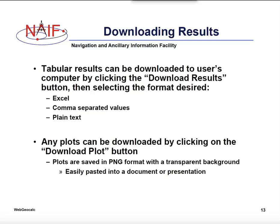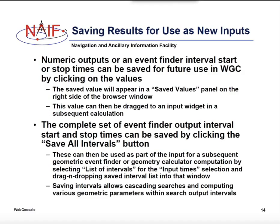Tabular results produced by WGC can be downloaded to the user's computer in Excel, comma-separated, or plain text formats. Any plots produced by WGC can be downloaded as well. Numeric outputs from one calculation, or a complete set of Event Finder windows, can be saved for reuse within WGC, which allows one to chain calculations — doing one search and then using the output from that search in the next calculation.